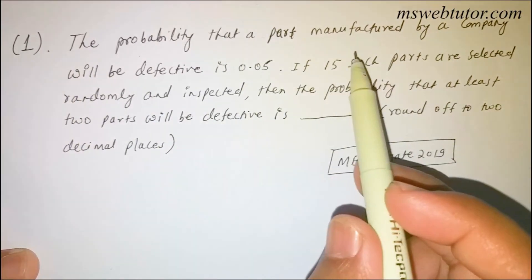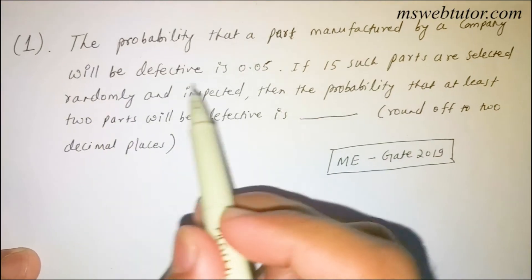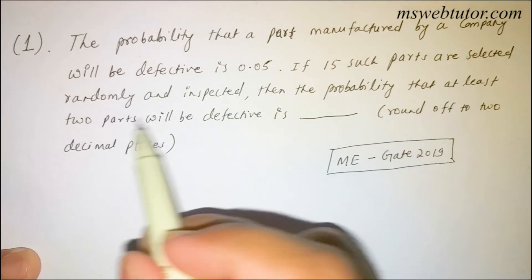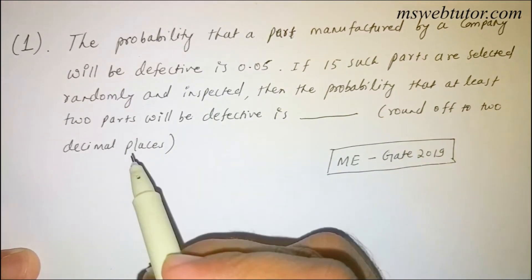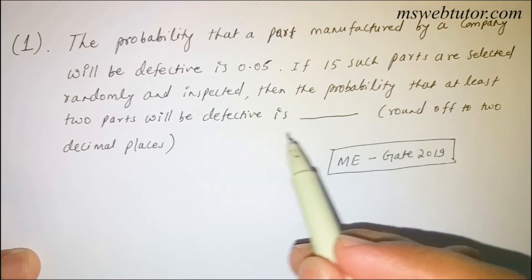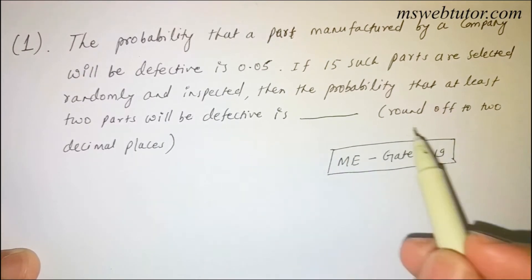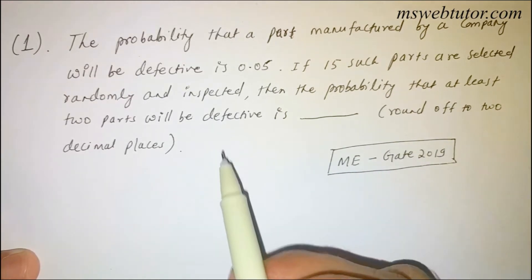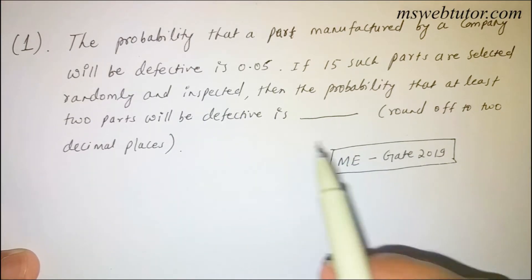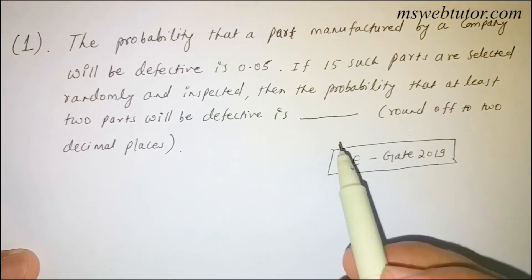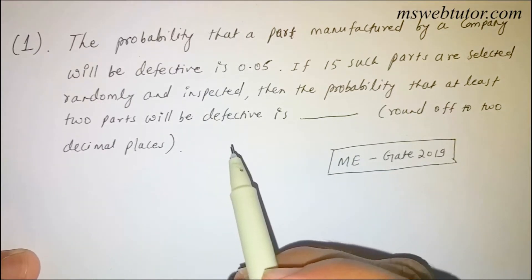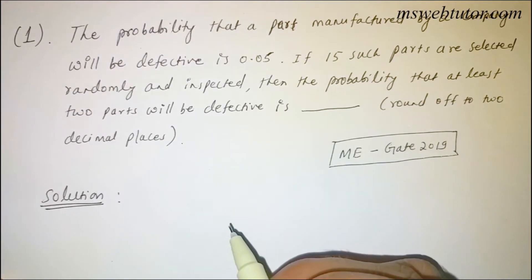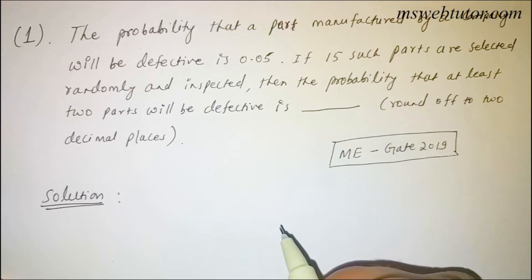The probability that a part manufactured by a company will be defective is 0.05. If 15 such parts are selected randomly and inspected, then the probability that at least two parts will be defective is — rounded off to two decimal places. This is AMIE 2019, a topic which is very common in all branches, so you can practice and solve this question using binomial distribution.